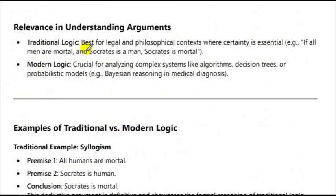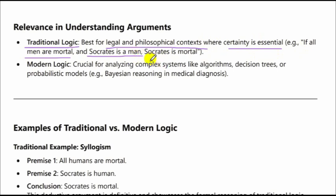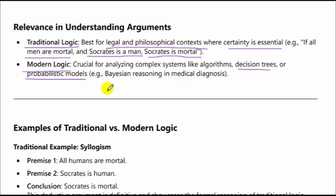Relevance in understanding arguments: traditional logic is best for legal and philosophical contexts where certainty is essential — for example, if all men are mortal and Socrates is a man, then Socrates is mortal. Modern logic is crucial for analyzing complex systems like algorithms, decision trees, or probabilistic models, such as Bayesian reasoning in medical diagnosis.